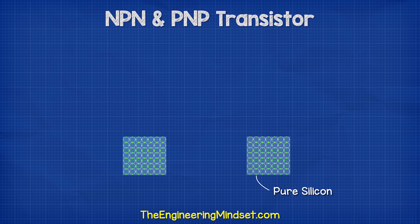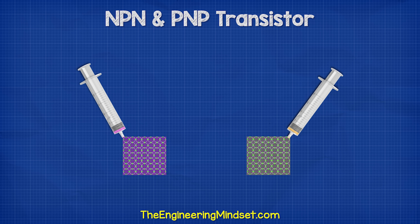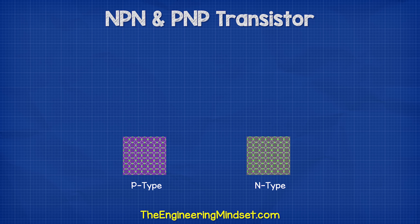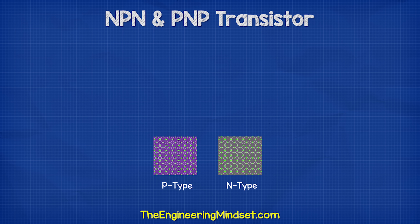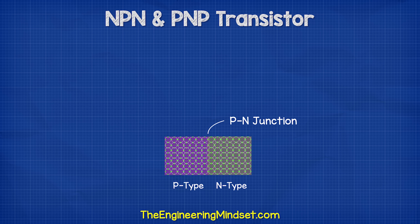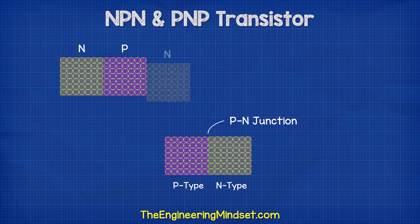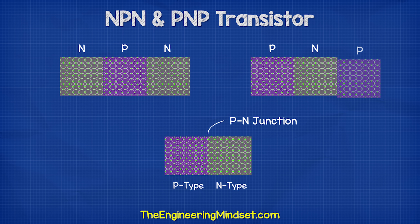Pure silicon has almost no free electrons, so what engineers do is dope the silicon with a small amount of another material, which changes its electrical properties. We call this P-type and N-type doping. We combine these materials to form the PN junction, and we can sandwich these together to form an NPN or a PNP transistor.